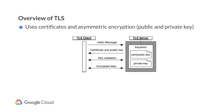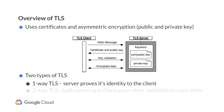Typically, if the data is encrypted using a private key on one side, then it will be decrypted using the public key on the other side, or vice versa. There are two types of TLS: one-way and two-way.